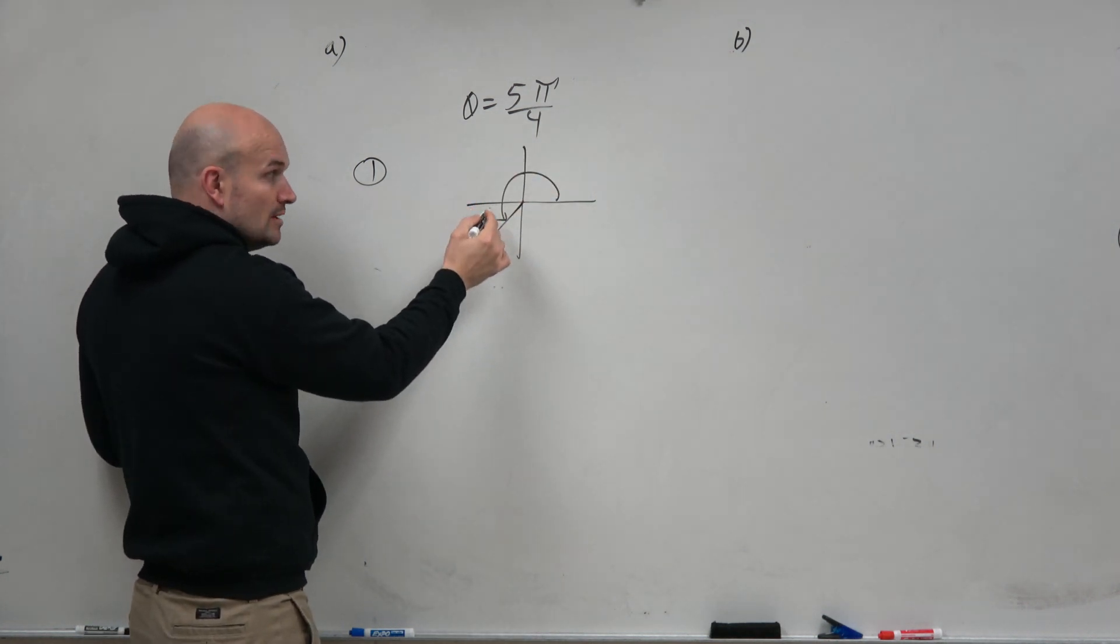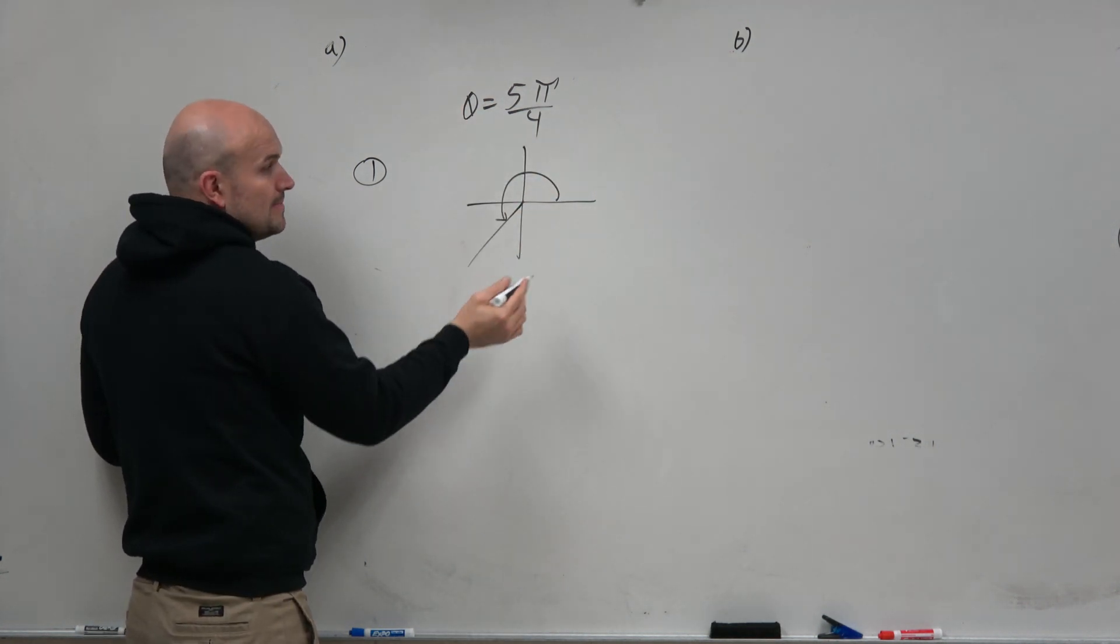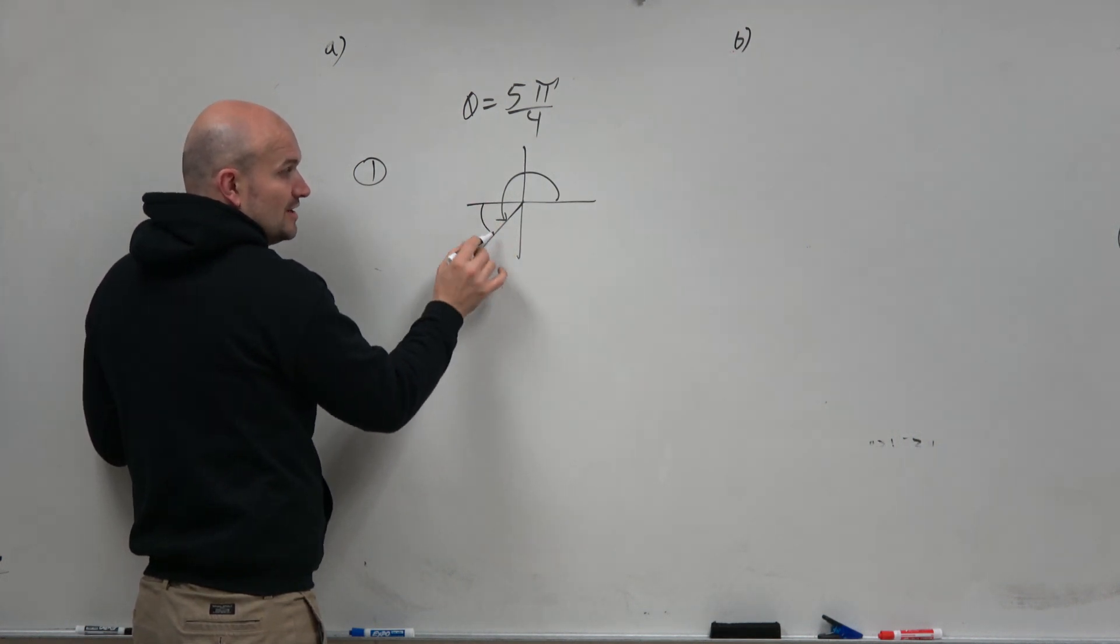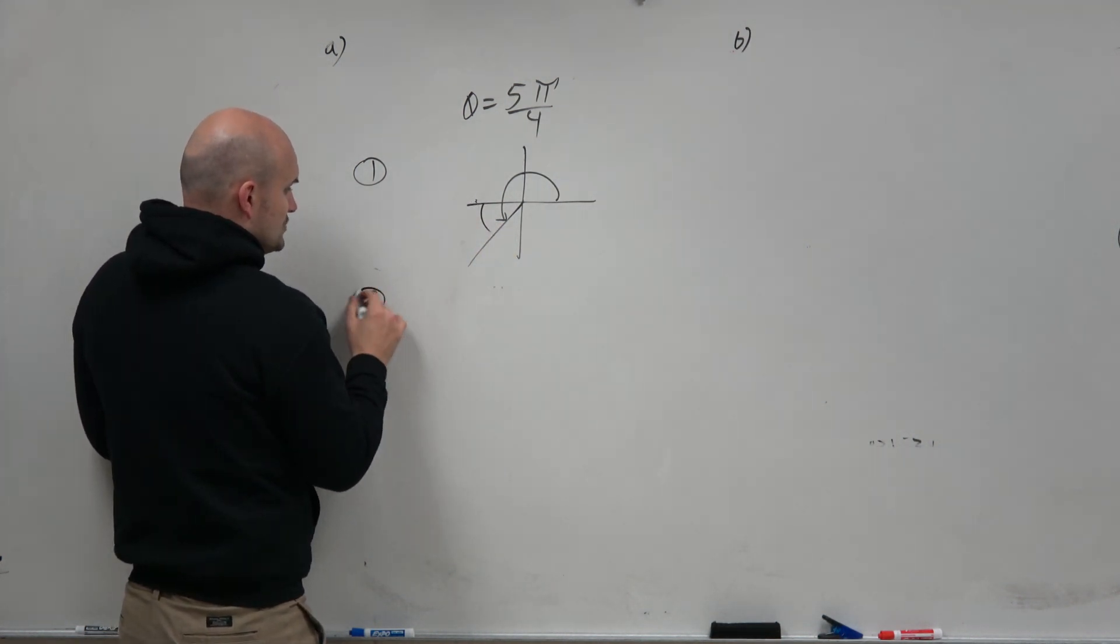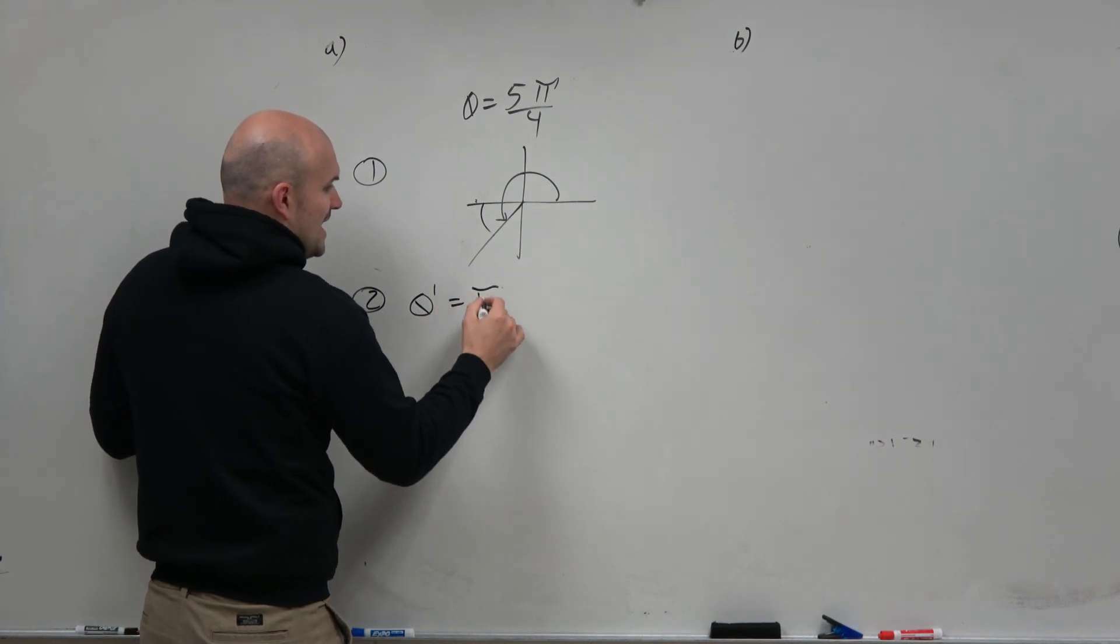Halfway around the circle is π, then π/4, and we're going an extra π/4. The reference angle measures how far it is from the terminal side to the x-axis. So we know the reference angle is π/4.